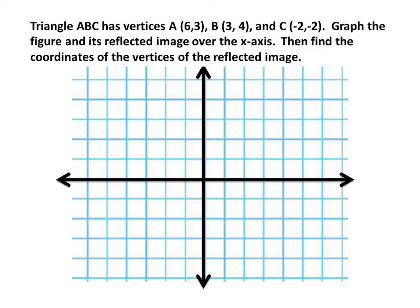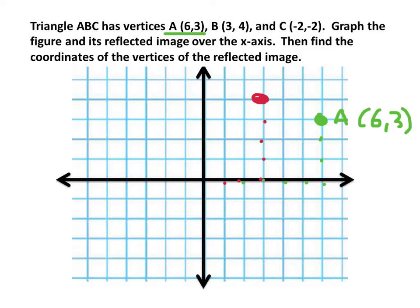Let's look at this example and graph the three points first. Let's start with A at (6, 3): 1, 2, 3, 4, 5, 6, and 3 right here — this is A at (6, 3). B is at (3, 4): 1, 2, 3 across, 1, 2, 3, 4 up. And C is at (negative 2, negative 2), which is right here.